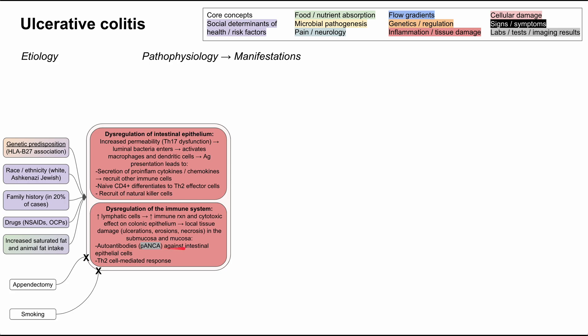In addition, you'll have autoantibodies against intestinal epithelial cells — these are P-ANCA antibodies, detectable on blood tests, though not typically used for diagnosis. There's also a Th2 cell-mediated response. On histology, early disease shows granulocytes and crypt abscesses, while chronic disease shows lymphocytes, mucosal atrophy, altered crypt architecture, and epithelial dysplasia.